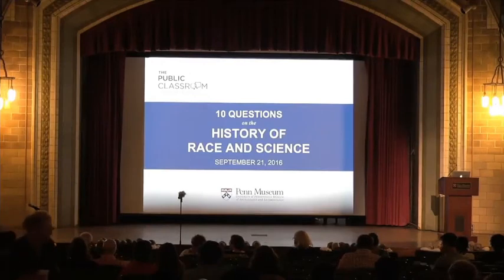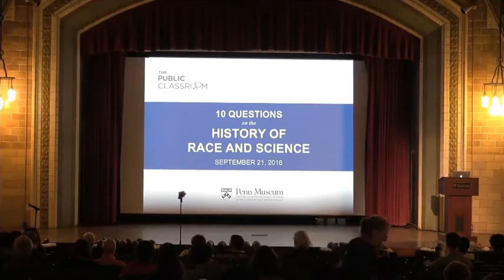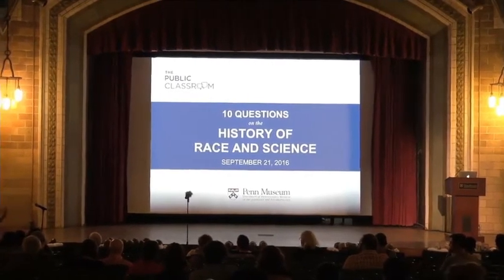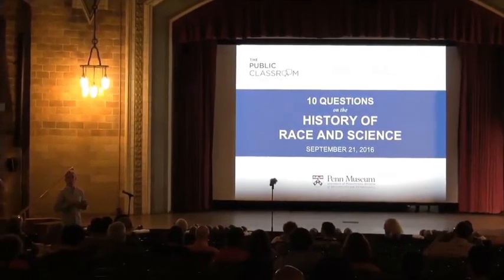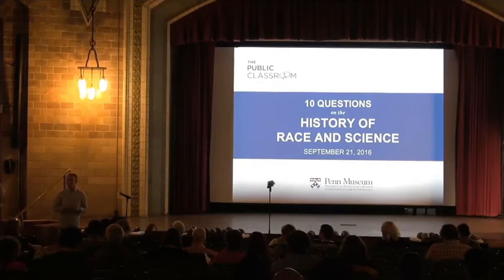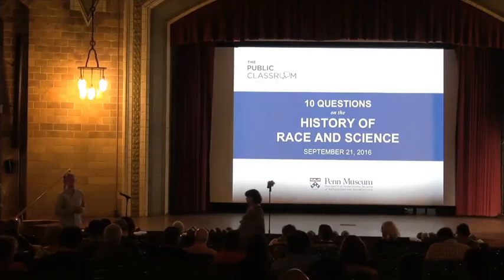We will be discussing understanding the history of race and science. This is the first part of a series of multiple discussions concerning the broad history of race and science, including biomedicine, genetics, as well as issues in anthropology and history about geography, culture, and violence. This is a public discussion which will, in many ways, focus on historical issues, including issues related to the Samuel George Morton Cranial Collection.